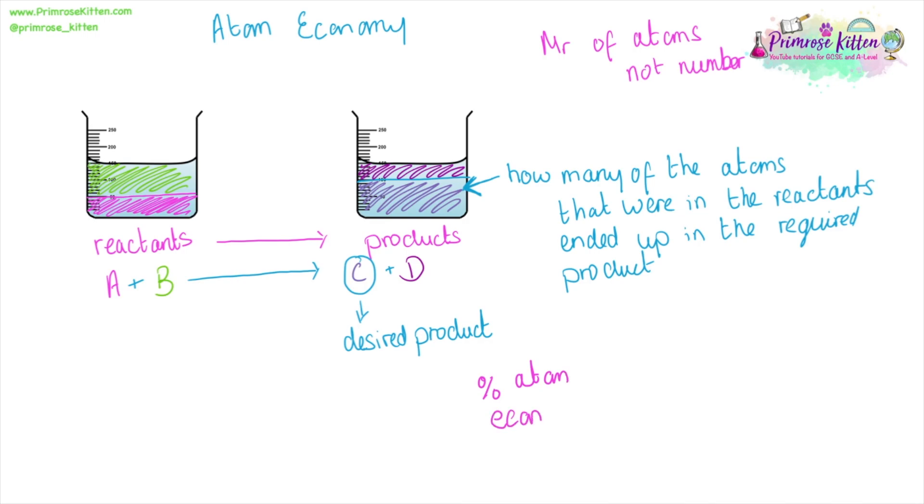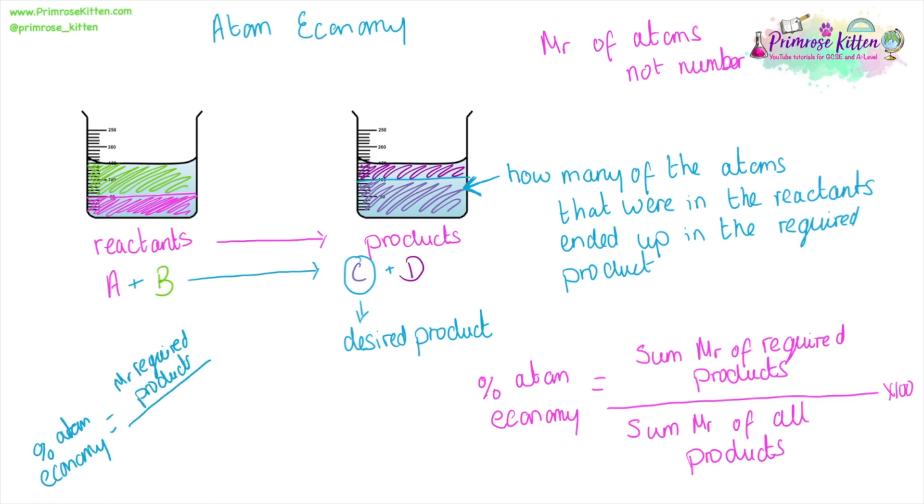The equation that we have for this is the percentage atom economy is the total or the sum MR of the required products over the sum MR, the total mass of all of the products. You might see this written slightly differently in different textbooks, or your teacher might have given it to you slightly differently. But it is the mass of the required products over the sum mass of the reactants.